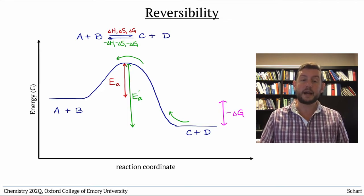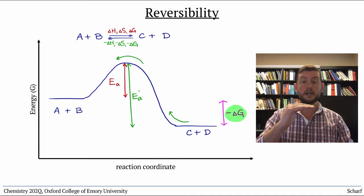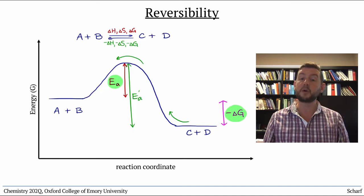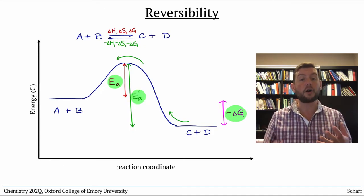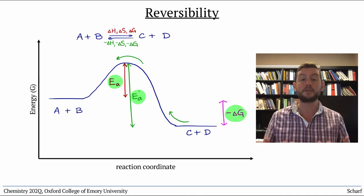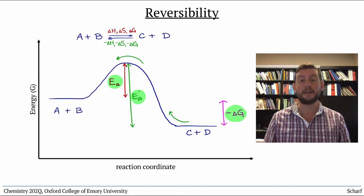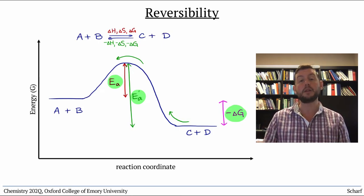The more spontaneous a reaction is, that is, the larger the magnitude of delta G, the bigger the difference in activation energies between the forward and reverse reactions, so the harder and less likely the reverse reaction is to occur. Overall, this leads us to one of the most important phenomena in chemistry, dynamic equilibrium, which is the basis of the next several videos.